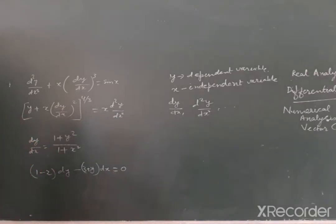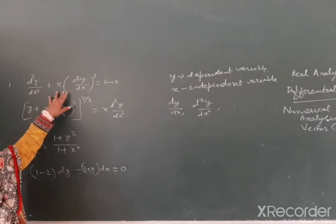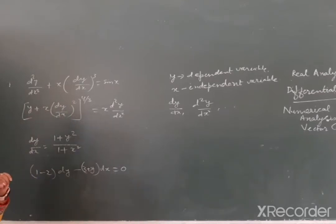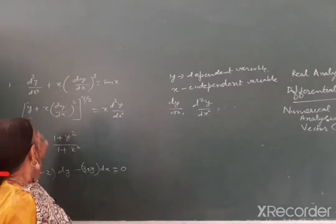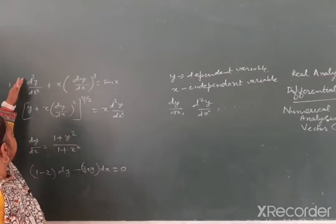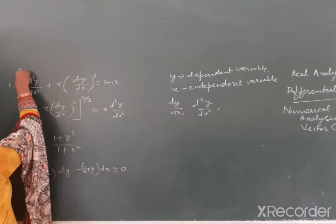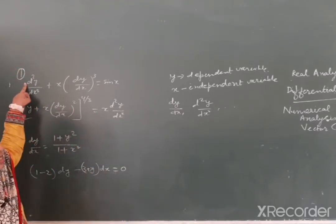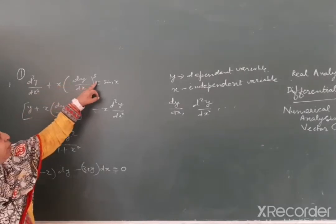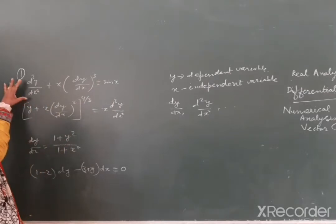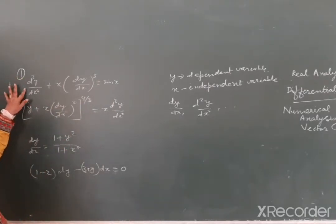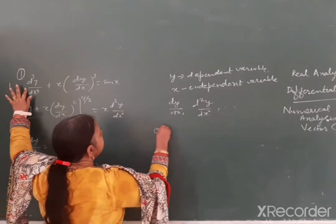Ab sabse pehle chapter jo hai, uske andar equations ki order kya hai aur degree kya hai, yeh hume pata karna hota hai. Toh hum order kisko kehte hain differential equation ka - jitna highest order ka derivative hota hai, wo iska order kehlaata hai. Jaise yeh pehli equation hai: d²y by dx² plus x(dy/dx)³ is equal to sin x. Sabse zyada order ka derivative kaun sa hai isme? d²y by dx² - yani iska order ho gaya 2.